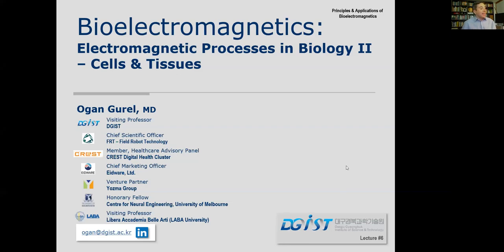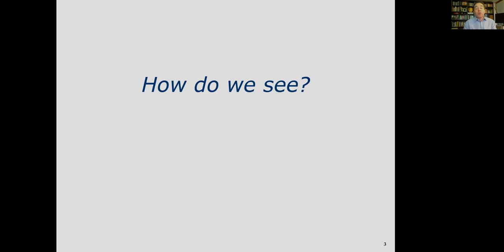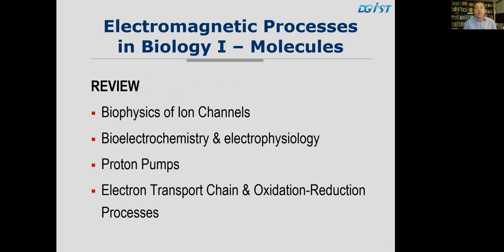Welcome again to Bioelectromagnetics. This is lecture number six and we will be talking today about electromagnetic processes in biology in cells and tissues. We've been talking through lectures one through five about electromagnetic processes in molecules, and today we'll be focusing on cells and tissues. Depending on time, we may also proceed to organisms in lecture number seven.